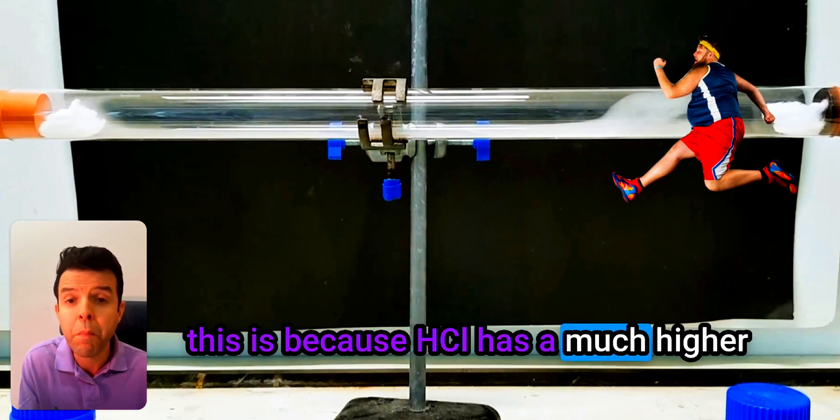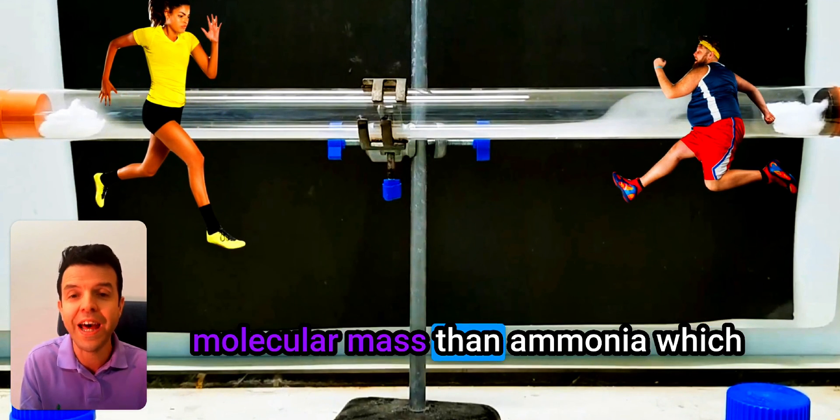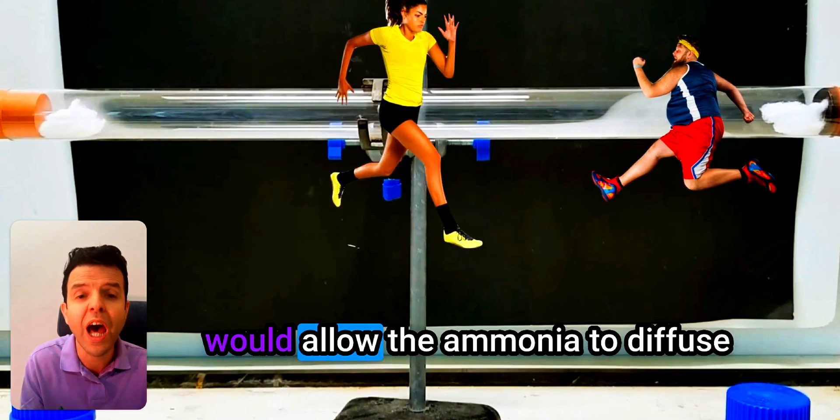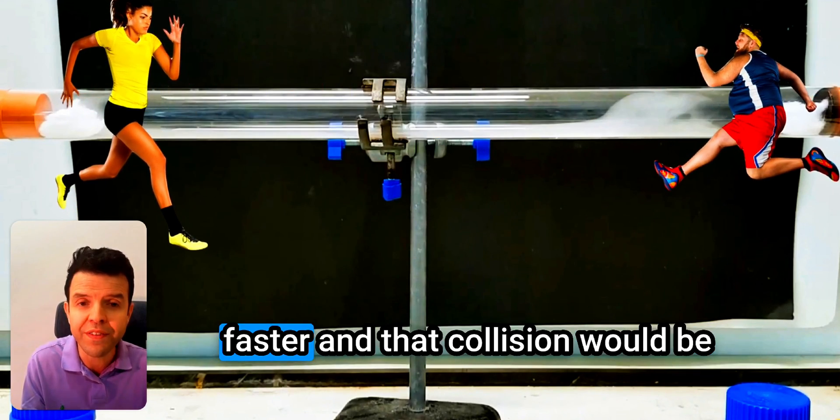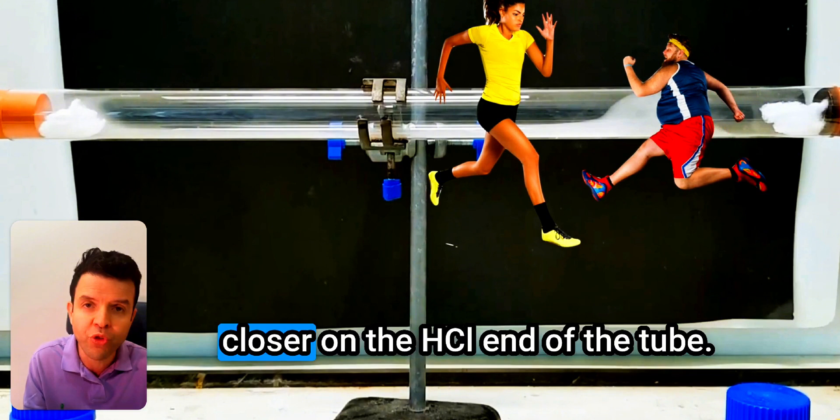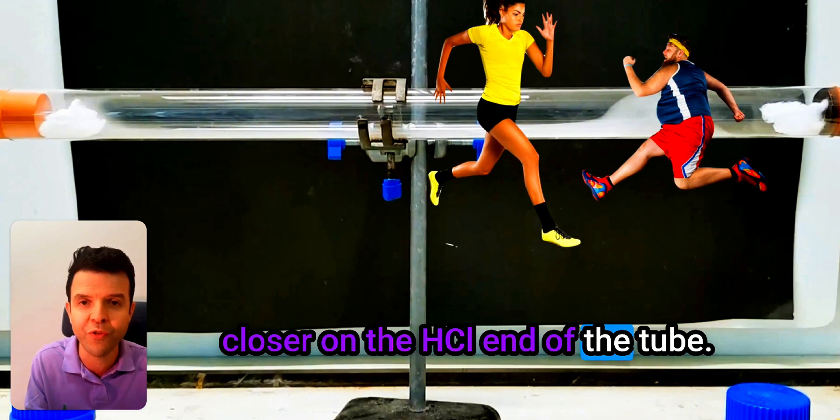This is because HCl has a much higher molecular mass than ammonia, which would allow the ammonia to diffuse faster and that collision would be closer on the HCl end of the tube.